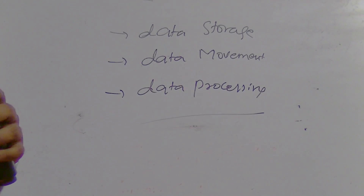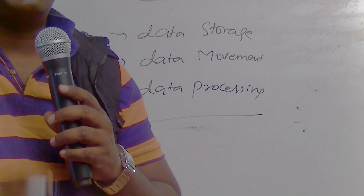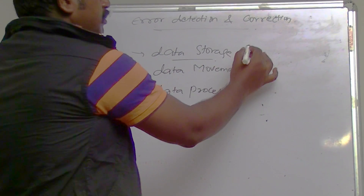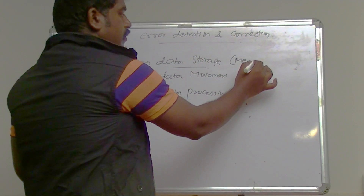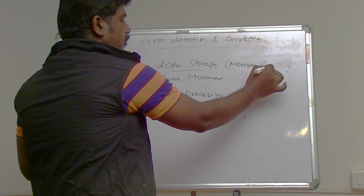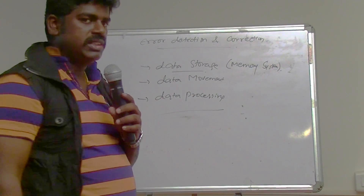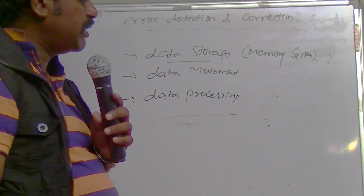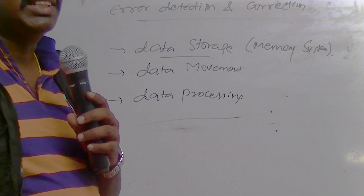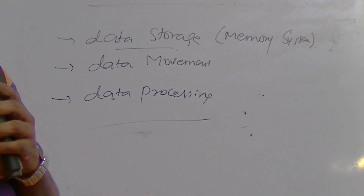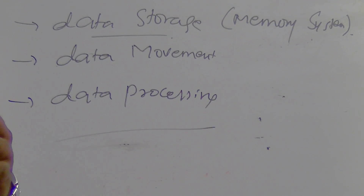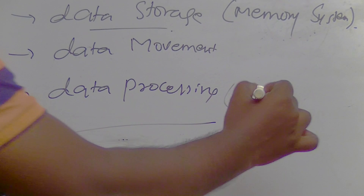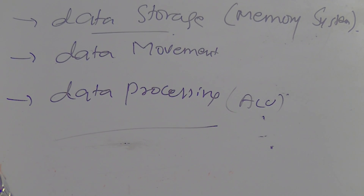Normally in computer architecture we deal with these computer functions. For data storage we deal with memory systems. For data movement we talk about the instructions used for data movement between registers, and also the control signals generated for moving data from one location to another. For data processing, we mainly look at the ALU and how data is processed.